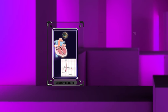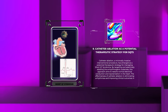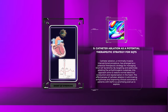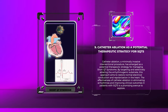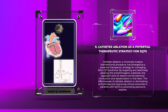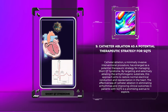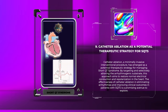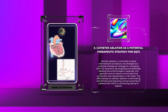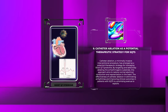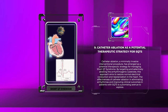Catheter ablation, a minimally invasive interventional procedure, has emerged as a potential therapeutic strategy for managing Short QT Syndrome. By targeting and selectively ablating the arrhythmogenic substrate, this approach aims to restore normal electrical conduction and repolarization in the heart. The effectiveness of catheter ablation in eliminating arrhythmias and improving clinical outcomes in patients with SQTS is a promising avenue to explore.